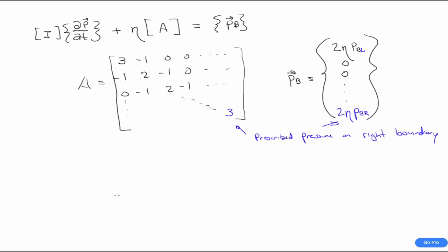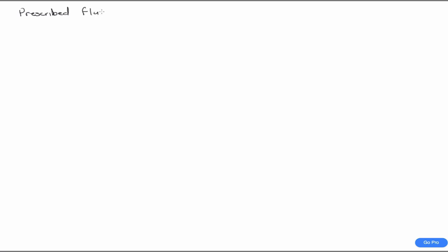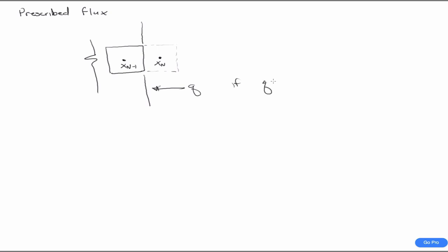The other type of boundary condition we might have is a prescribed flux. In this case we look at the nth (fake) grid block on the right edge. We prescribe a flux q into that boundary. The most common case is q equals zero, which we call the no-flow or no-flux boundary condition, but we can also handle nonzero flux.